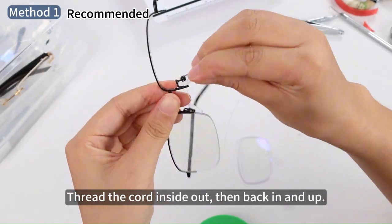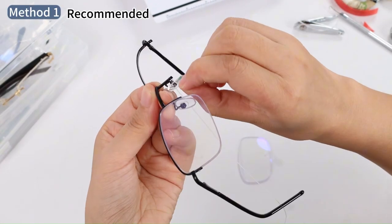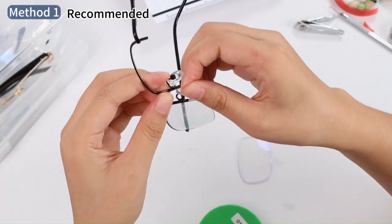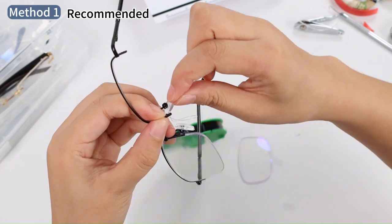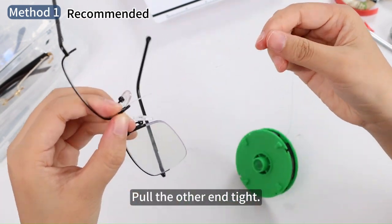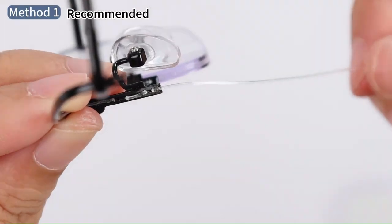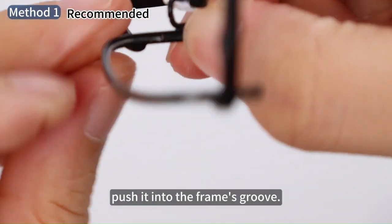Thread the cord inside out. Then, back in and up. Pull the other end to hide the cord, push it into the frame's groove.